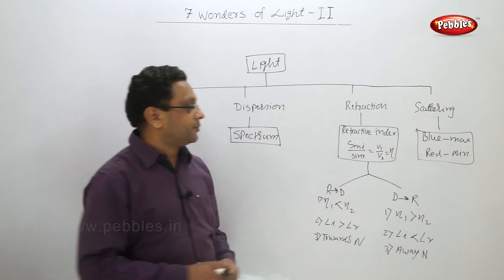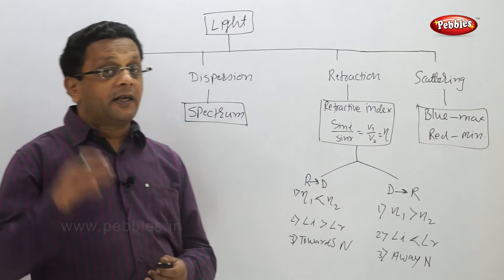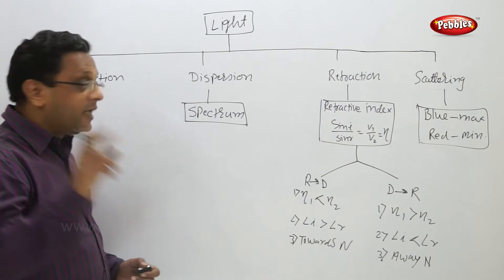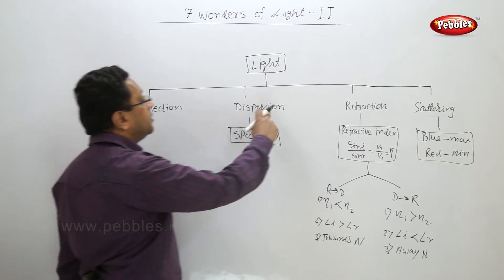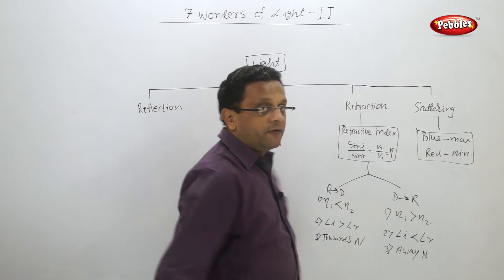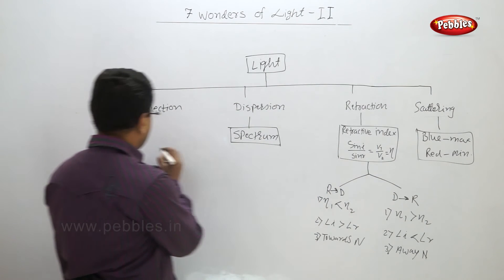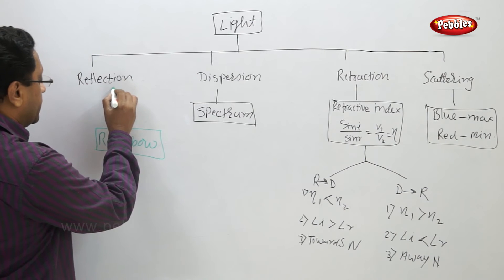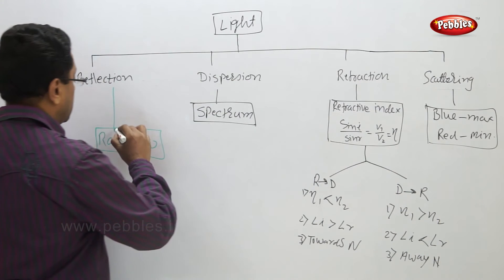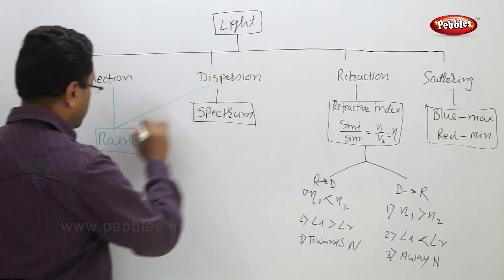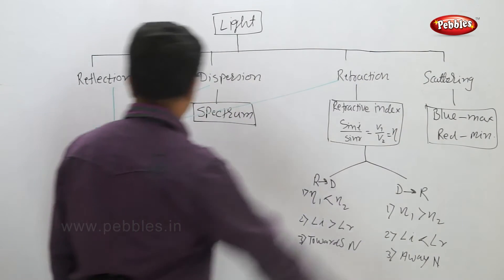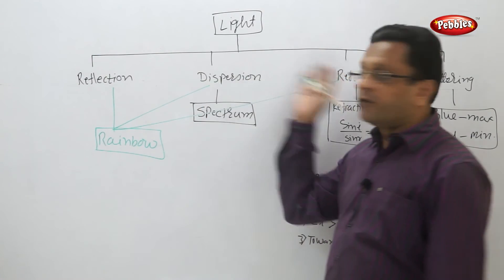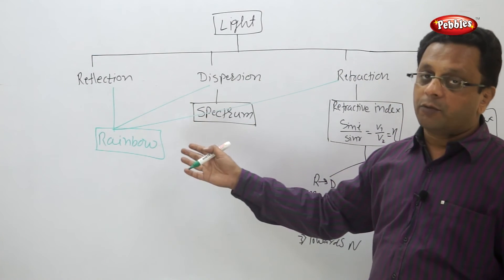Now one point is remaining, that is the rainbow. Rainbow is the combining effect of reflection, dispersion, and refraction. So I can write it is the effect of reflection, dispersion, and refraction. Because of these three phenomena we see rainbow.